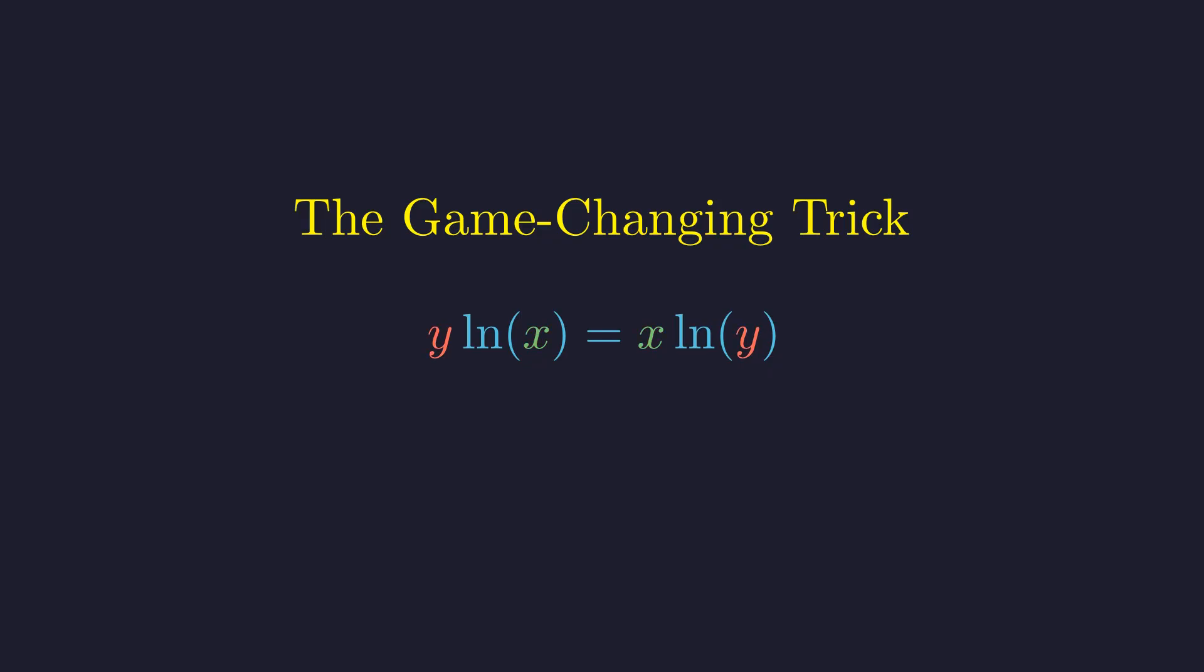Watch what happens when we rearrange this equation. Dividing both sides by x times y gives us this beautifully symmetric structure. The same function of x must equal the same function of y.